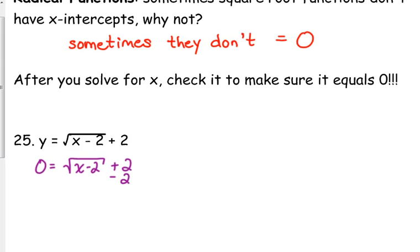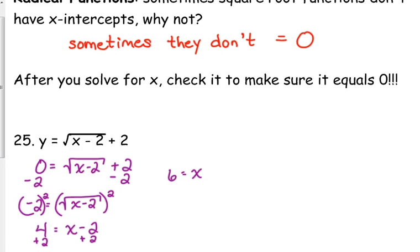We're solving for the variable, so we've got to get the radical by itself first of all. So we subtract 2 from both sides. Then we square it. Negative 2 squared is positive 4. And then add 2. So that says 6 should be our x-intercept.